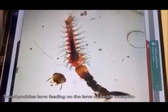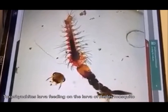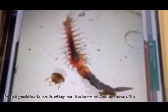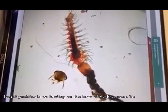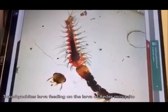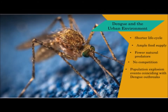Attempts to introduce Toxorhynchitis as a biological control of Aedes in cities have been performed in the past, yet these beautiful giants have often failed to thrive due to the lack of clean water bodies and the general inhospitability of the urban environment. Here lies the crux of our problem: we have engineered our urban environments in such a way that it has become conducive for problematic species and harmful to beneficial ones. With fewer competitors and natural predators, warmer ambient temperatures, and no shortage of breeding grounds, the population of Aedes and Culex mosquitoes thrive with a much shorter life cycle than in the forest.